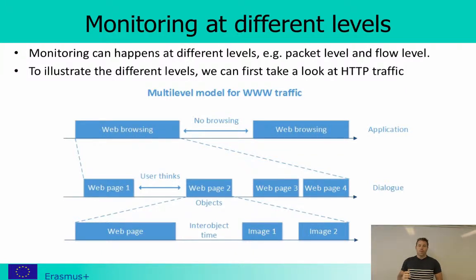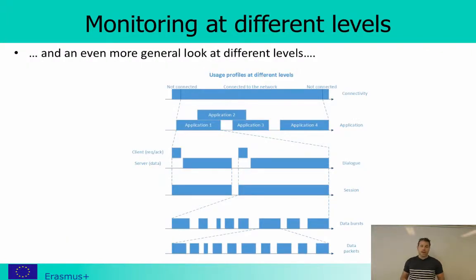Describing a web browsing session looks very different depending on whether you view it from an application, dialogue, or session point of view. More generally, you can ask at which different levels can we observe our connection to the network. At the connectivity level, you are either connected or not. Going down to the application level, you are connected and running different applications — starting one, stopping another.